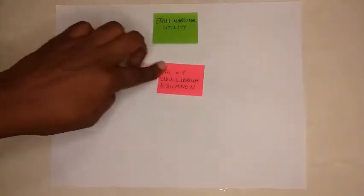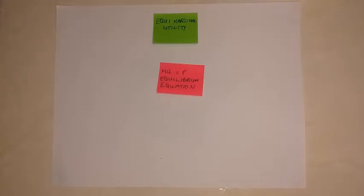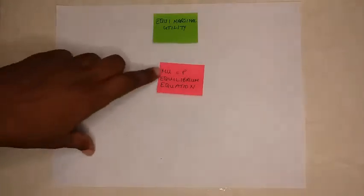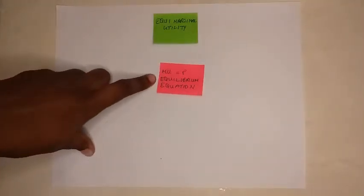So in our previous video, we established the fact that consumer equilibrium occurs where marginal utility is equal to price. So what happens in a situation when we are looking at more than one good, if it's two goods being consumed? This law must still hold true for each good.